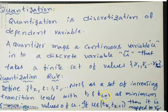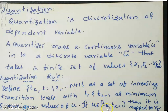The minimum value of u is t1 and the maximum value is tl+1. The transition level decides whether to assign a value of u to r1 or r2. In the general case, if u belongs to tk to tk+1, then it is mapped to rk. So if u is in between tk and tk+1, then u tilde will be assigned the value rk. This is the quantization rule.